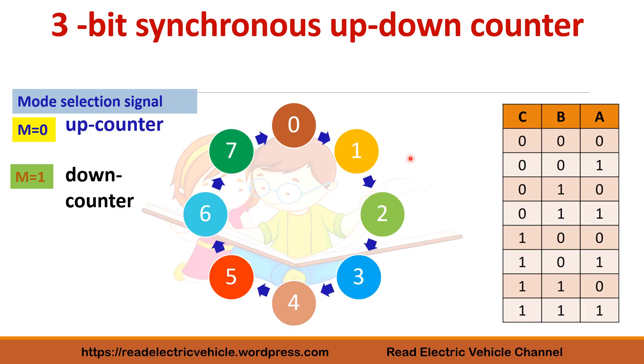This is the state diagram for up counter. Let me introduce the down counter also. After 0 for down counter, 7 will come, then 6, 5, 4, 3, 2, 1, 0 in reverse direction. Here M=1. If I give M=0, the counter works as up counter, and when M=1 it acts as a down counter.